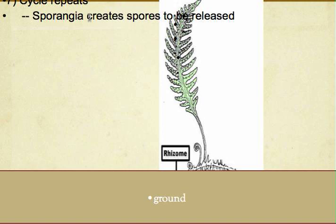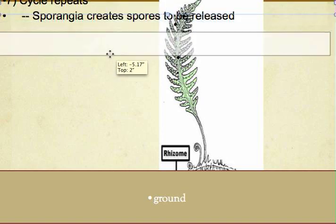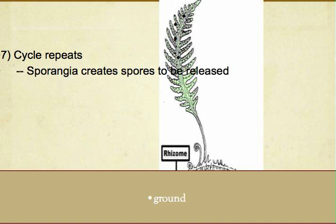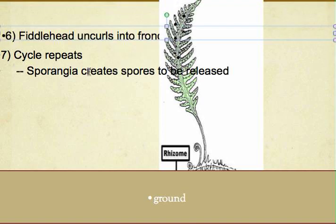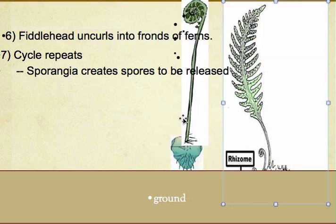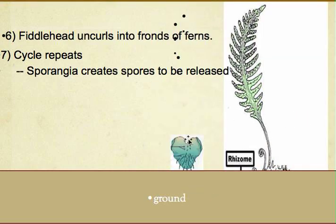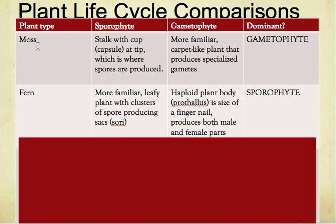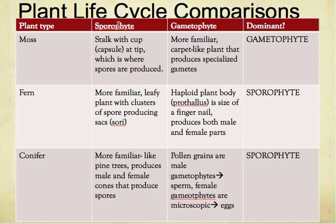The fiddlehead uncurls into the frond of the fern. What happens next is the cycle repeats again, and the sporophyte creates spores to be released. This is the final step — the step before that would be the one prior. This is a comparison of moss and ferns and the conifer, listed again over here.